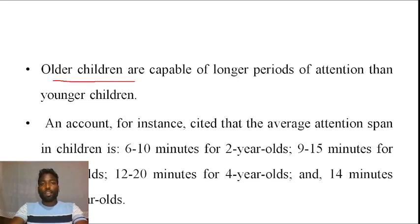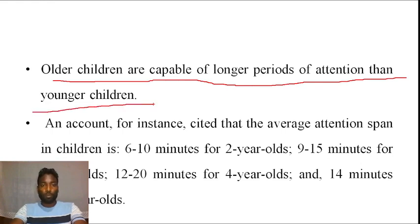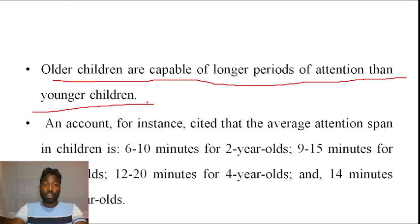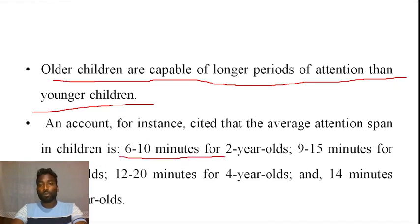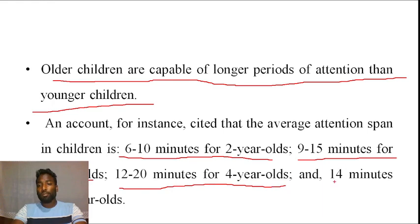Older children are capable of longer periods of attention than younger children. Adults can pay attention for a longer period than younger people. For instance, the average attention span in children is 6 to 10 minutes for two-year-olds, 9 to 15 minutes for three-year-olds, 12 to 20 minutes for four-year-olds, and 14 minutes for five-year-olds.